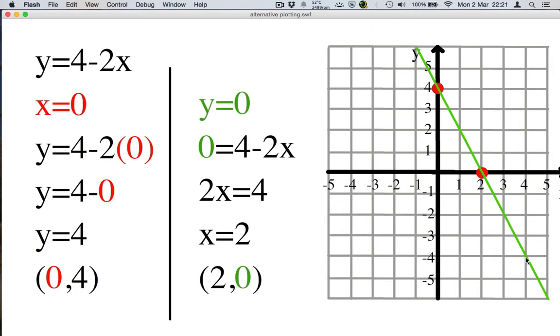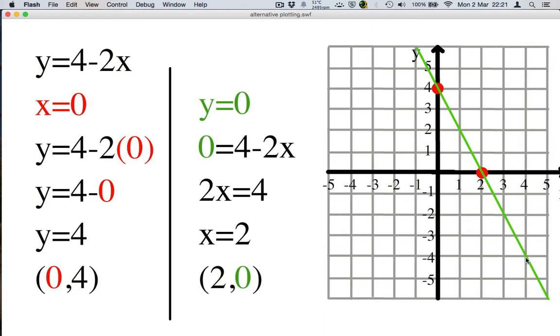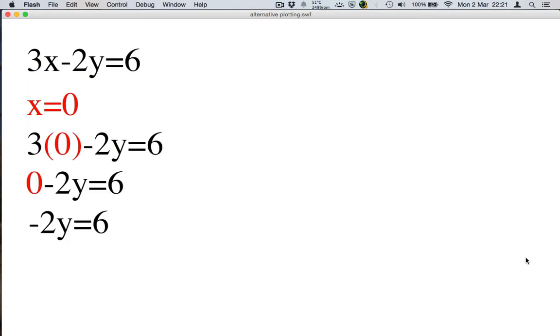Now let's have a look at another example. 3x minus 2y equals 6. So as before, we start with x equals 0 and this will help us find the y-intercept. Plug that into our formula. 3 times 0 minus 2y equals 6. So that's 0 minus 2y equals 6. So minus 2y equals 6. Dividing by minus 2 gives me y equals minus 3. So this is the point (0,-3). Our first point.